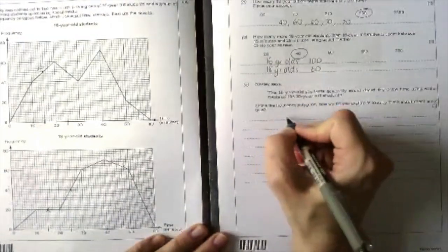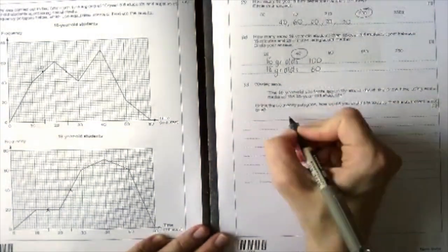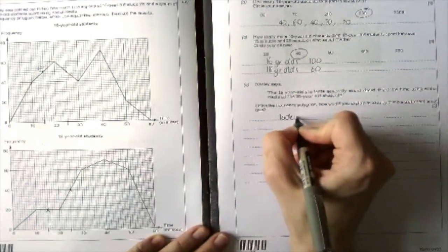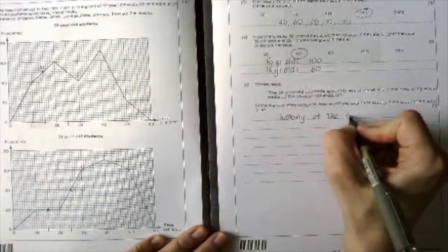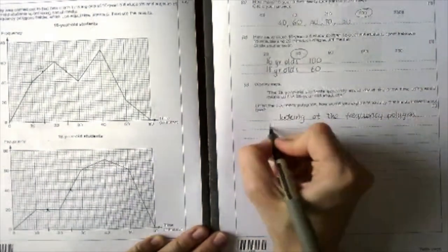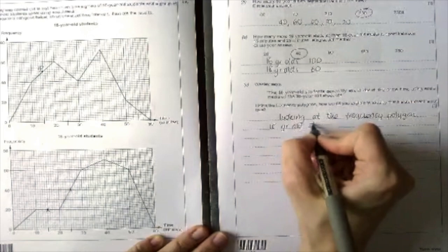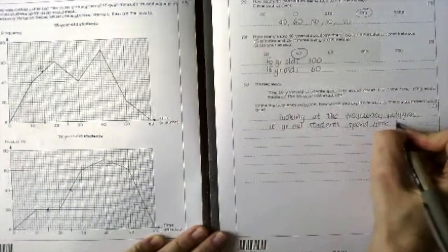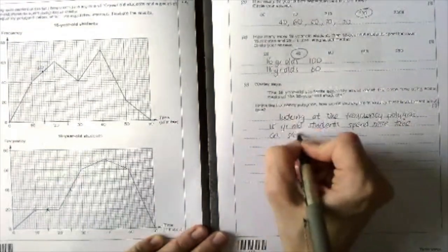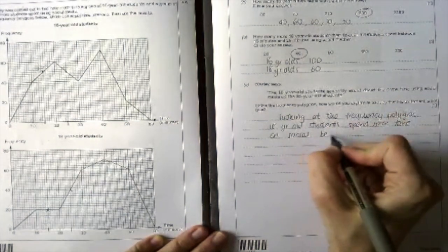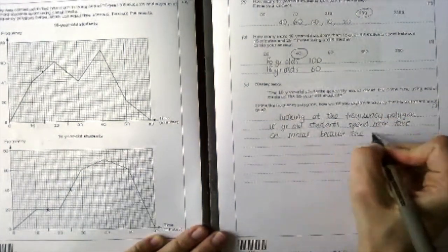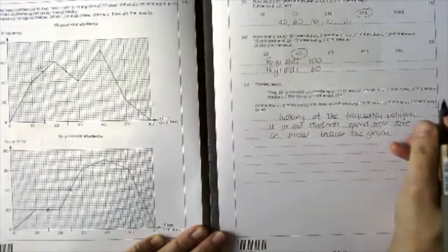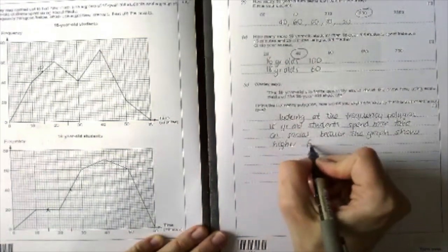So you need to write something along the lines of... There are lots of different answers on the mark scheme but looking at the frequency polygon, you can see 18-year-old students spend more time on social media because the graph shows higher frequencies.